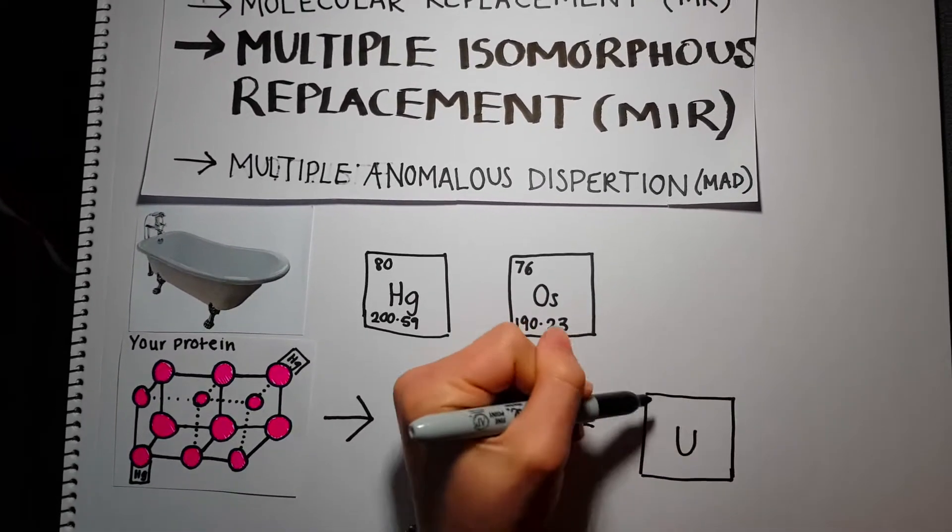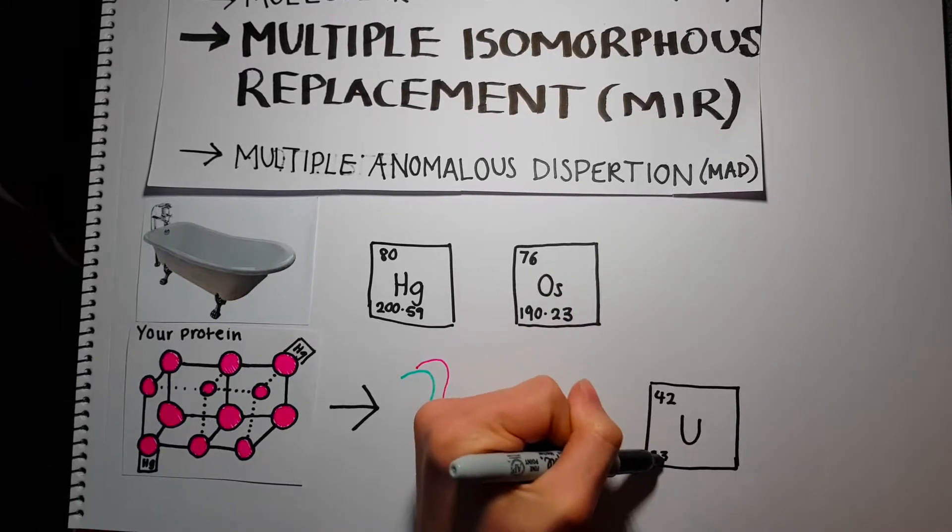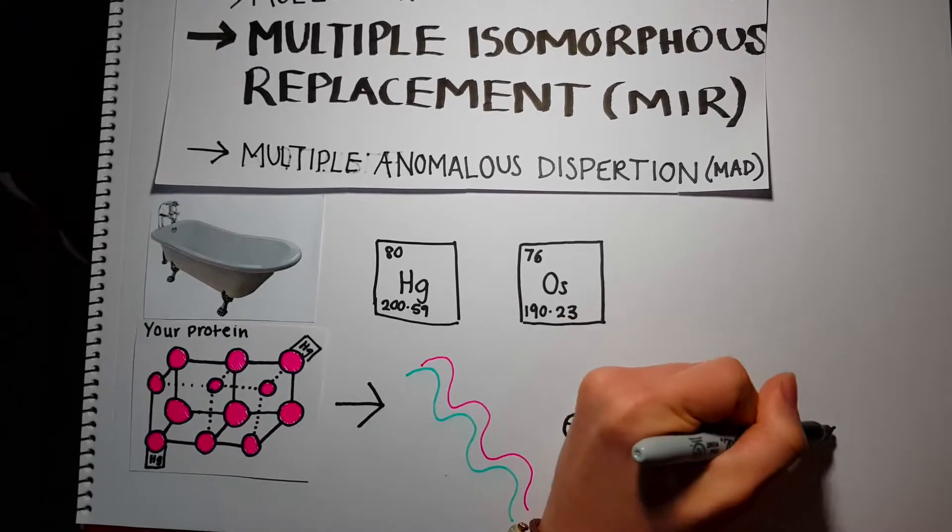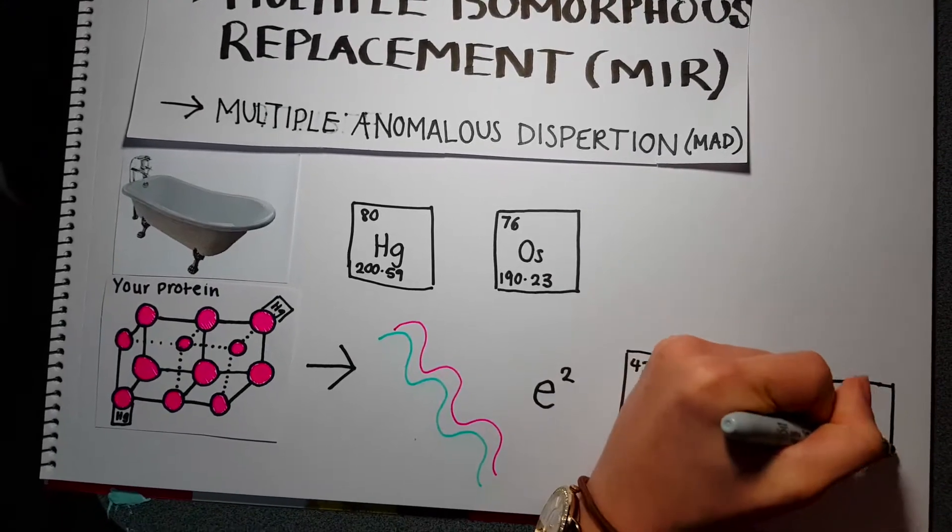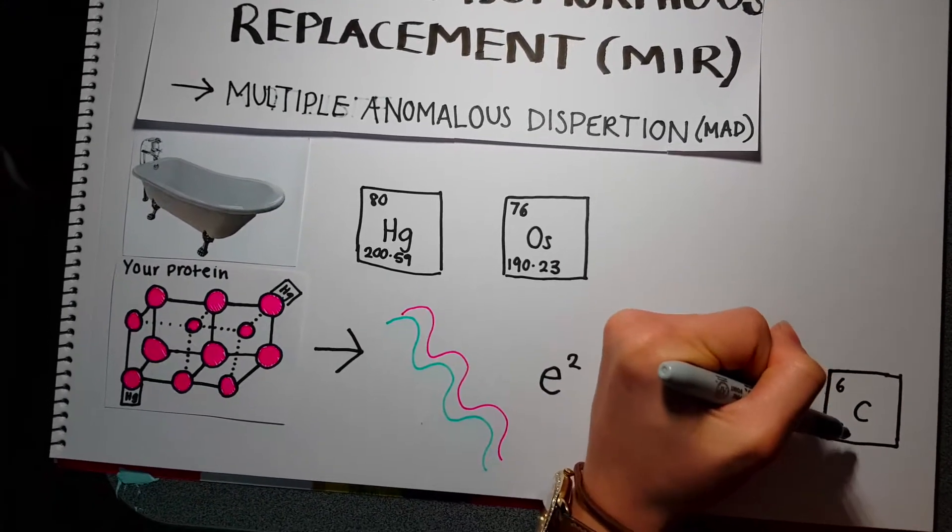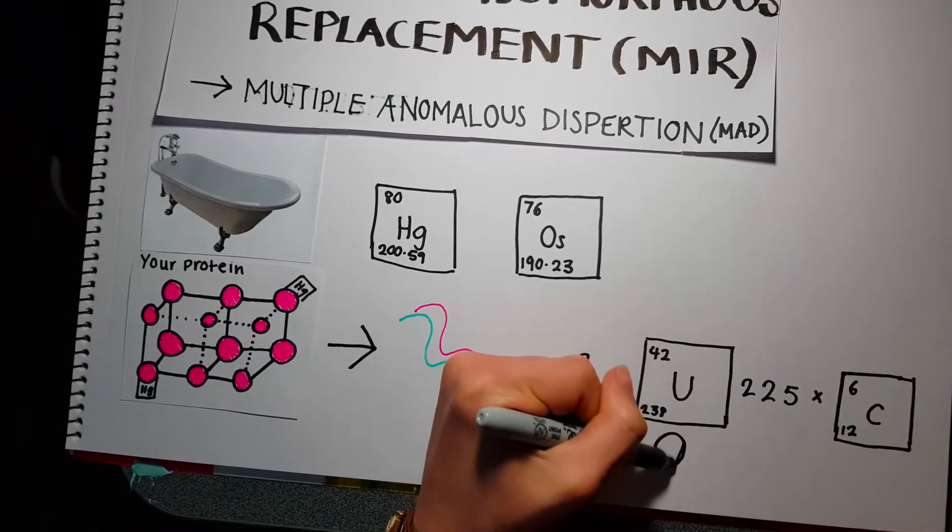A uranium atom, with 15 times the electrons of a carbon atom, contributes 225 times more to scattered intensity. This makes the spot on the diffraction pattern more intense.